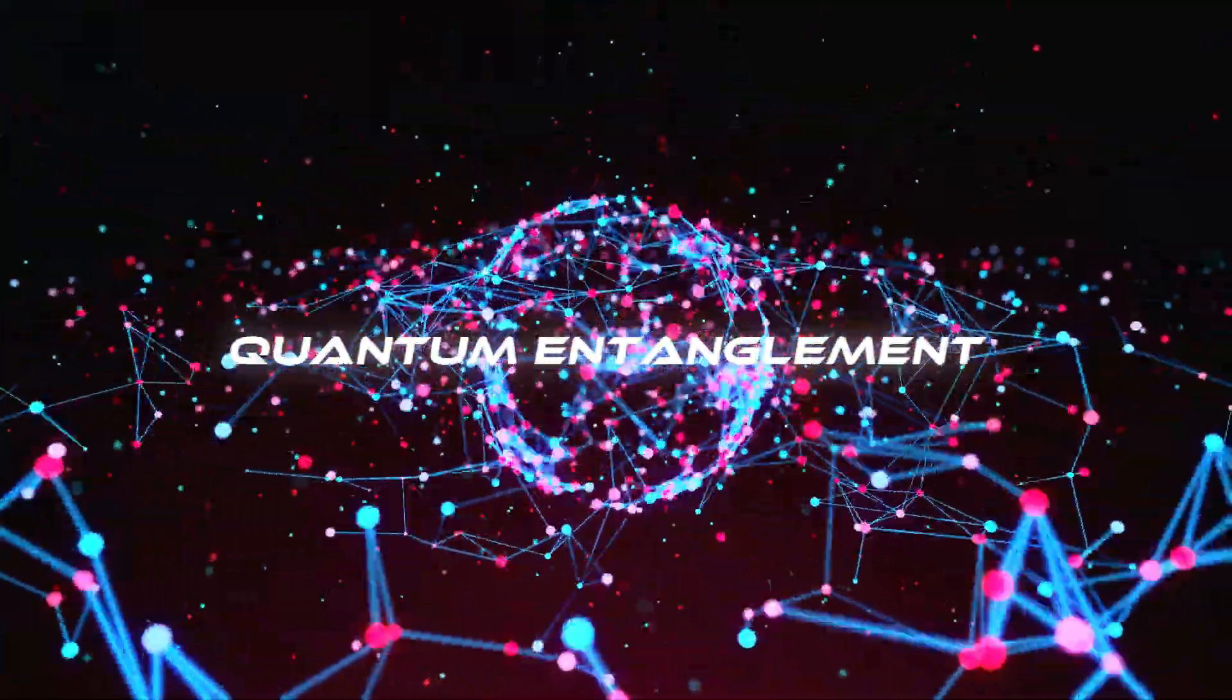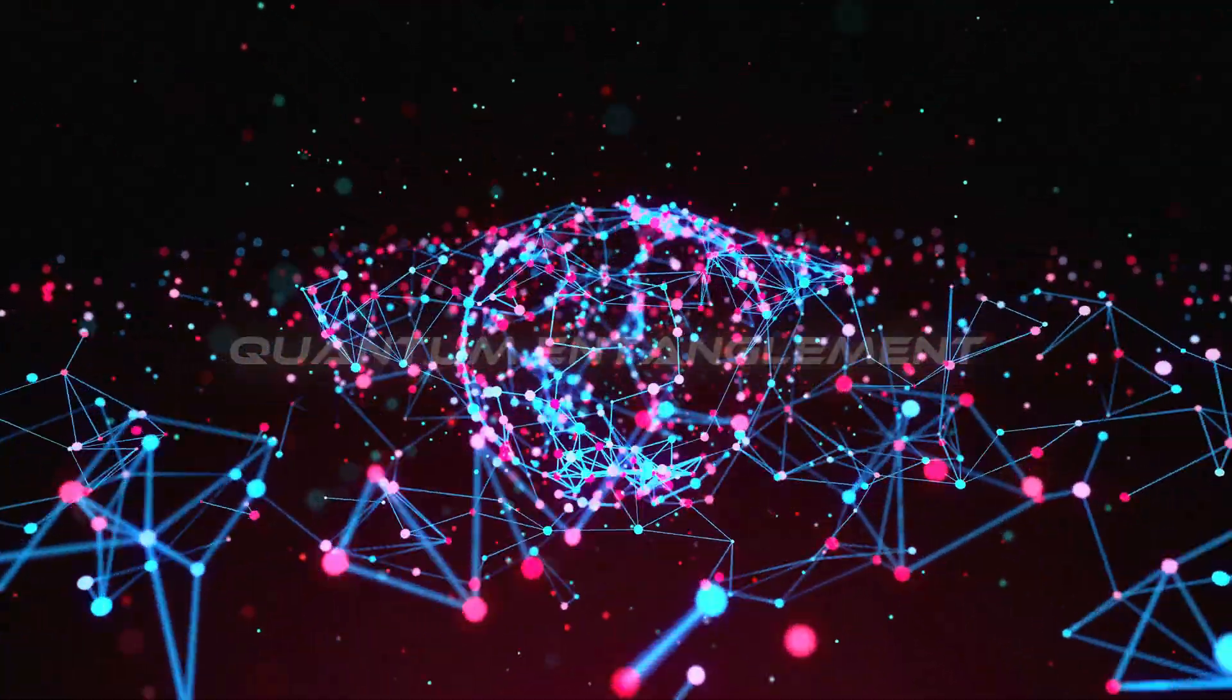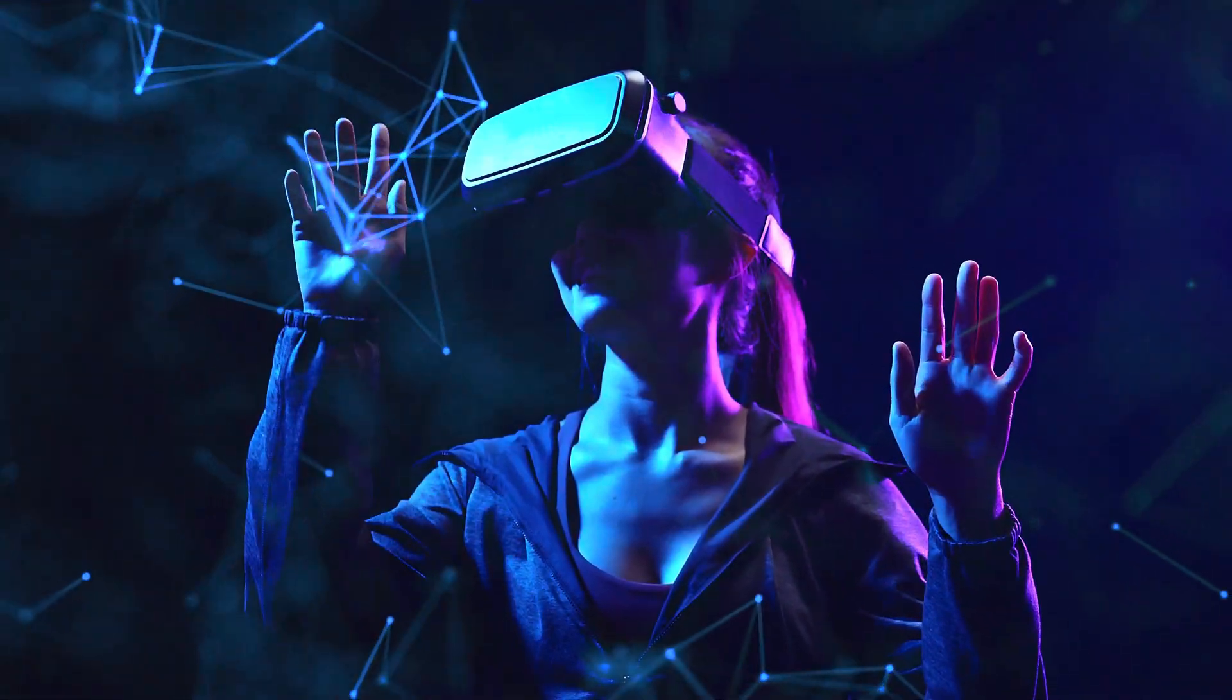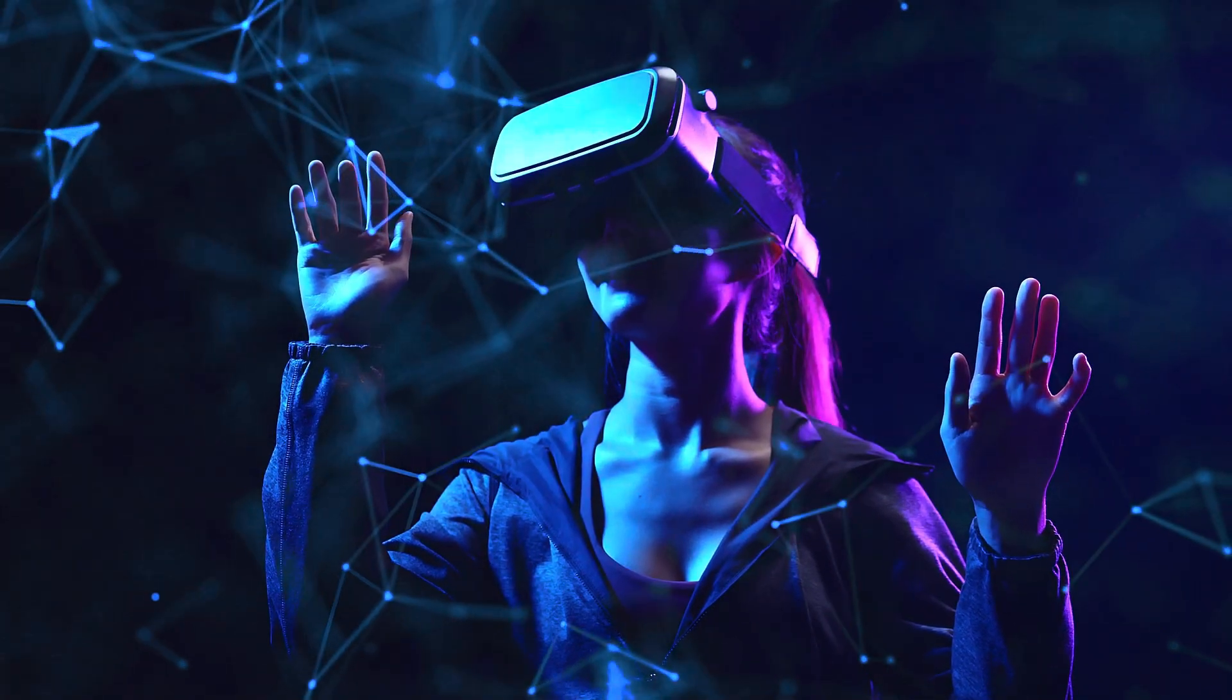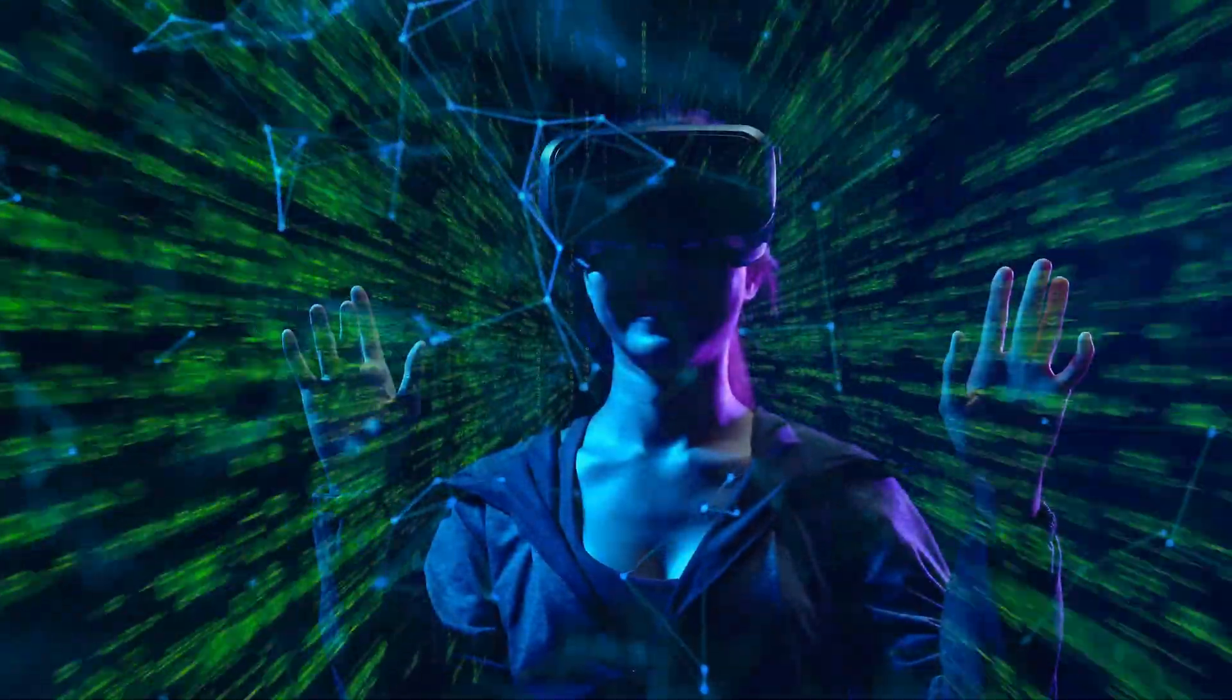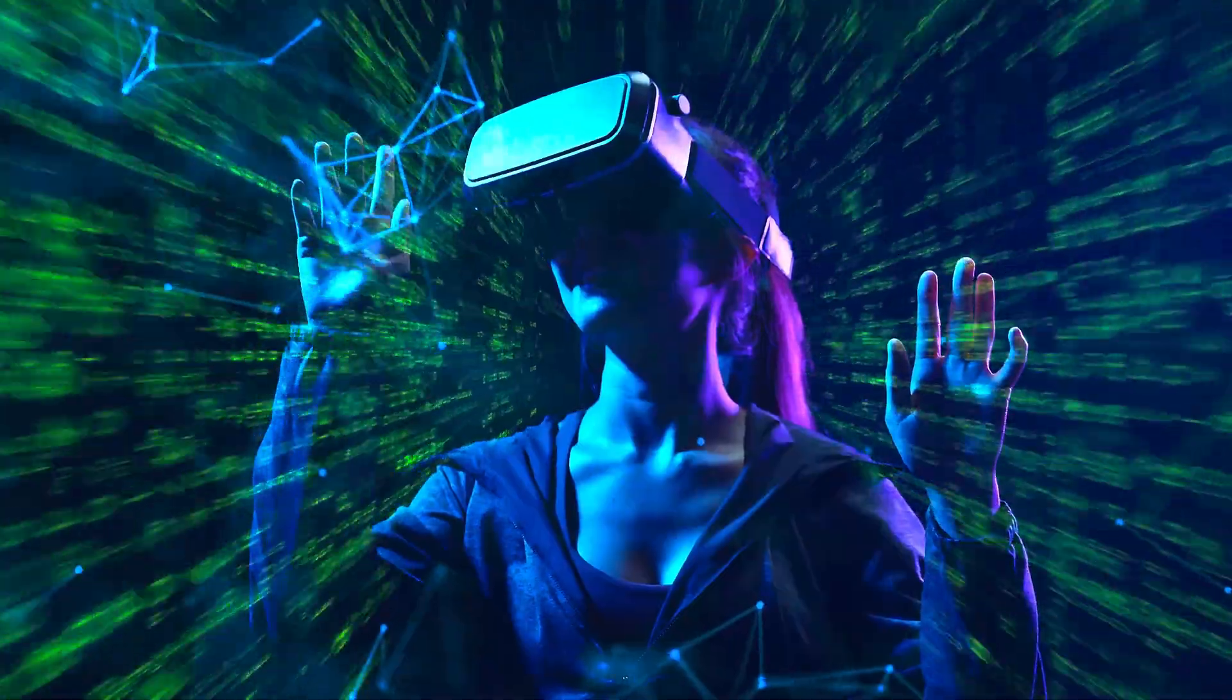These connections, called quantum entanglement, are like invisible highways between particles. They build the fabric of reality. This is what allows the universe to be one whole, not just a collection of pieces. So, reality may not be made of stuff, but of information. A complex dance of data that makes up everything.